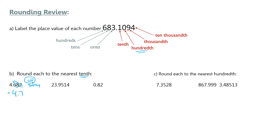Let's try another one: 23.9514 to the nearest tenth. That means I keep just one decimal place, and I look to the hundredth digit beside the nine. Five and up means round up, so the five tells me I have to round the nine up. Nine rounds up to 10, which means I bump everything ahead — so instead of 23.10, the answer becomes 24.0. We still need the decimal place there.